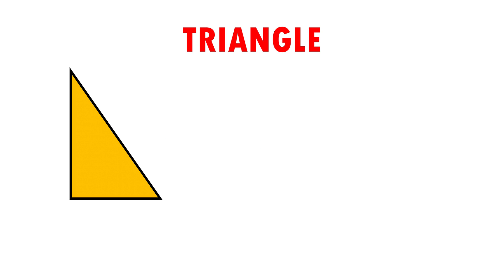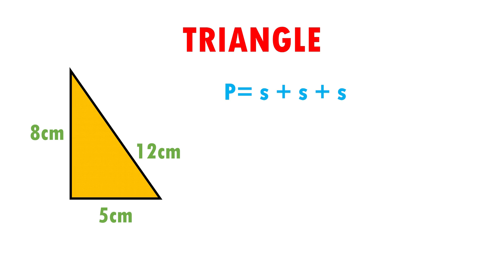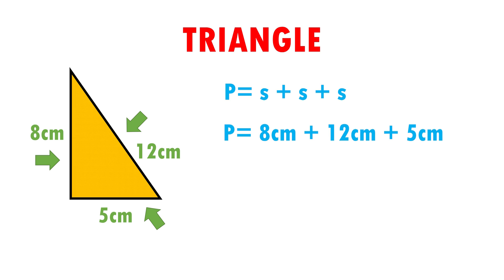Here I have a triangle with measures of 5, 12, and 8 cm. The formula to calculate the perimeter is side plus side plus side. We are going to add the three sides of the triangle. Perimeter is equal to 8 cm plus 12 cm plus 5 cm. When adding 8 plus 12 plus 5, I get 25 cm.